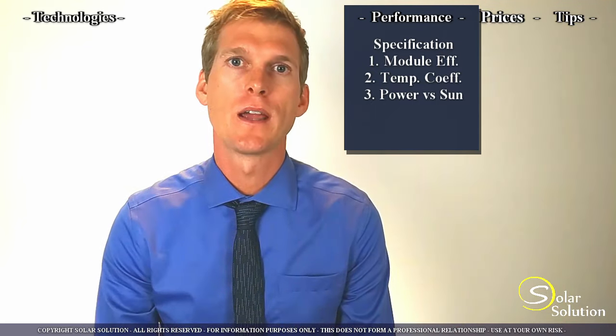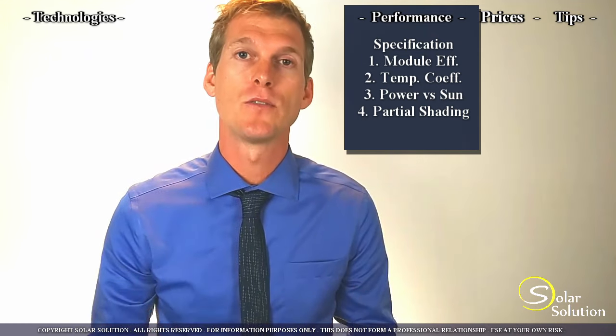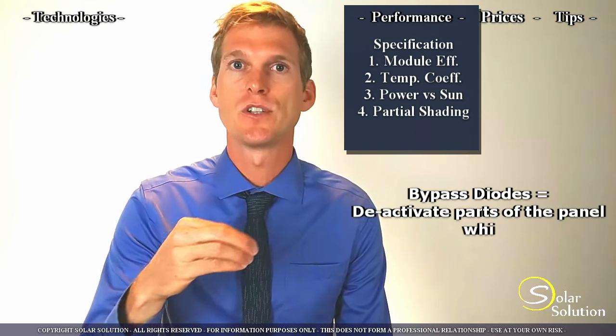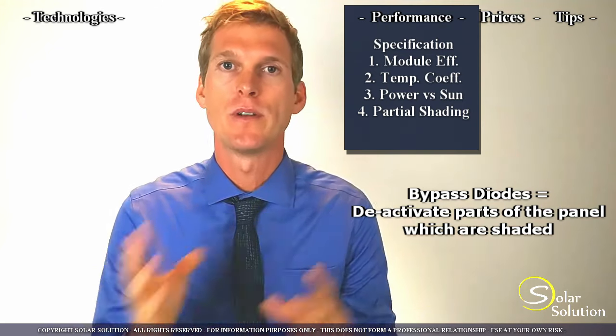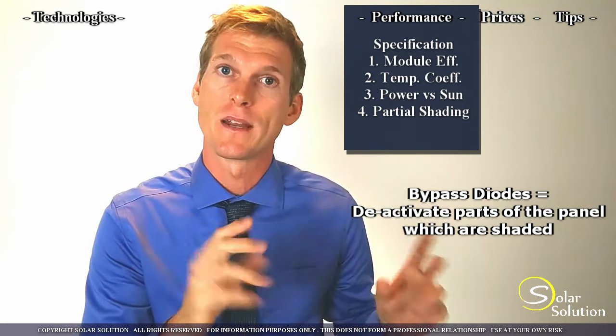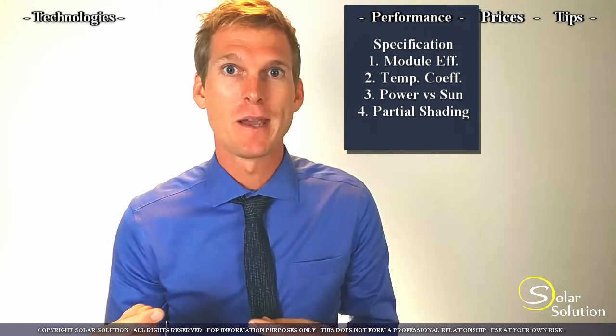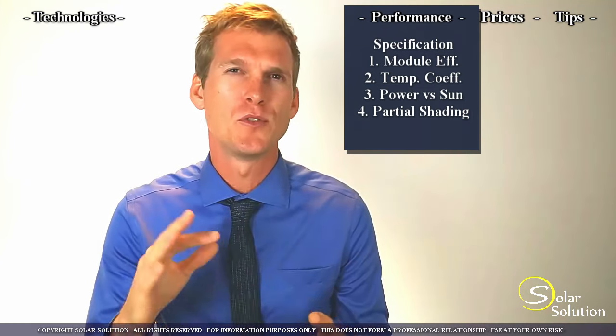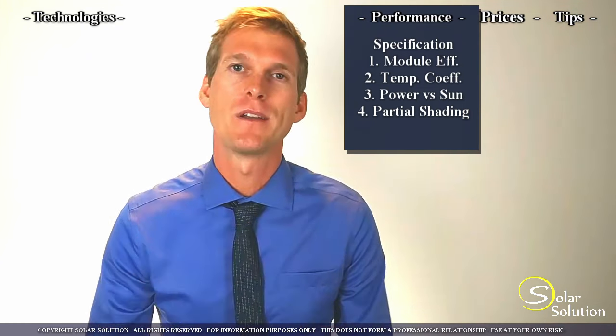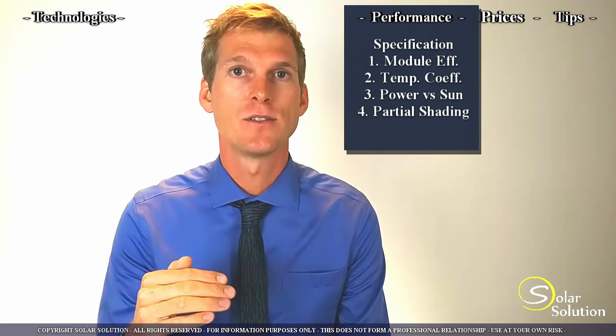So number four, what you would be looking at is the effect of partial shading on the panel. There are these components that are built into the panel called bypass diodes. And what they do is if there's partial shading on your panel, then they'll cut off, they'll disable that part of the panel while the rest of the panel can keep performing at maximum efficiency. Ideally, you'd want to have one bypass diode for each solar cell, but this is really expensive. So they normally put two, three, or four bypass diodes per panel. So the higher the number of bypass diodes, the better.